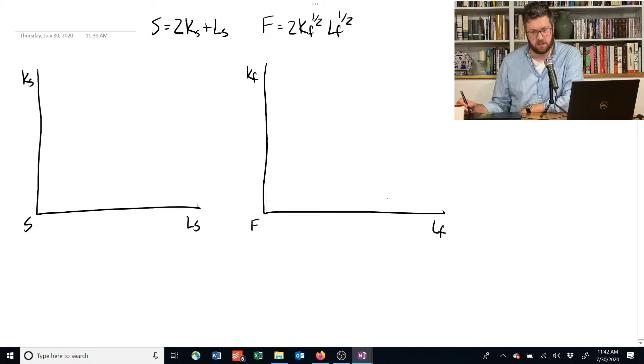Let's stick with the assumptions that we had at the end of last video, where the amount of capital that was used to produce shelter was 1 and the amount of labor was 99 and vice versa over here. KF was equal to 49 and LF was equal to 1.